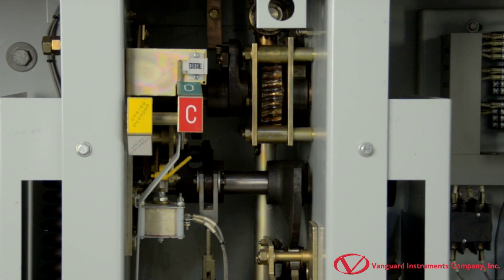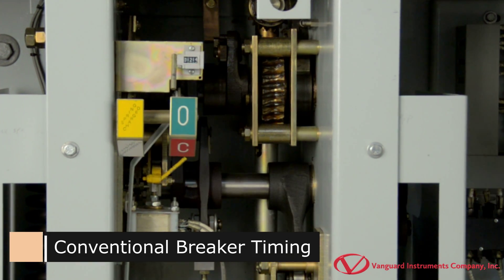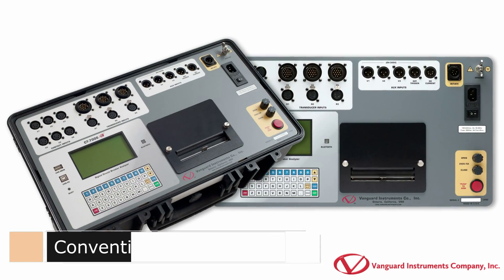In this section we'll go over the steps to perform a conventional circuit breaker timing test with the Vanguard CT7000 S3.